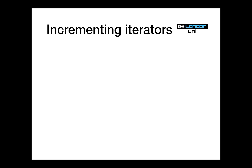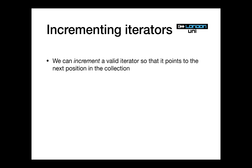The fundamental operations on iterators: we can create them, copy them, assign them, compare them for equality, and dereference them if they're valid. Another fundamental operation is incrementing. If we have an iterator pointing to position p, we can increment it so it points to position p+1. We write `++iter` — pre-increment — just like with int: `int i = 3; ++i;` gives us 4. There's also post-increment `iter++`, which also increments but returns the previous value. In general, you should prefer pre-increment — it's more efficient.